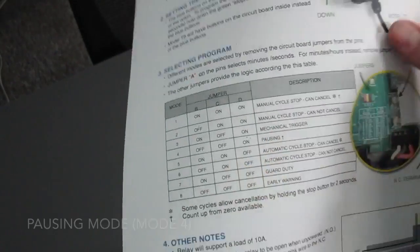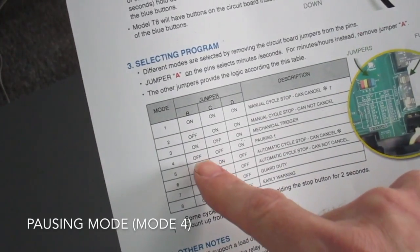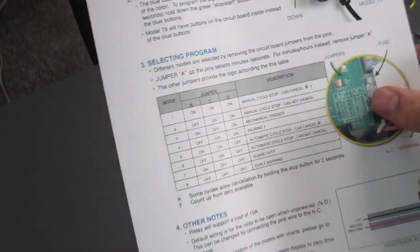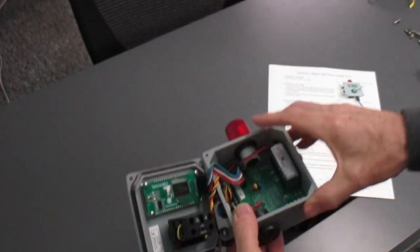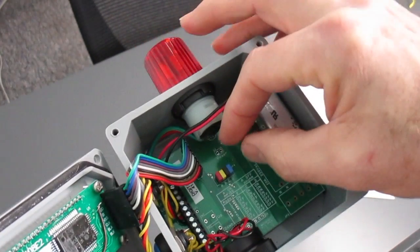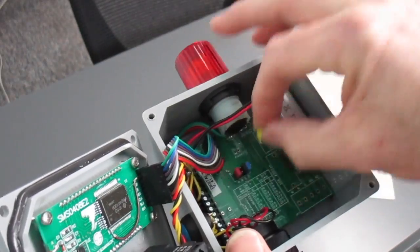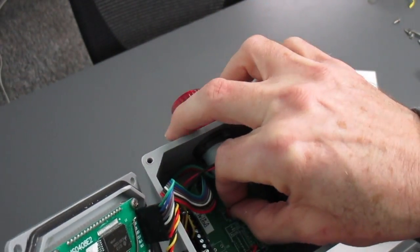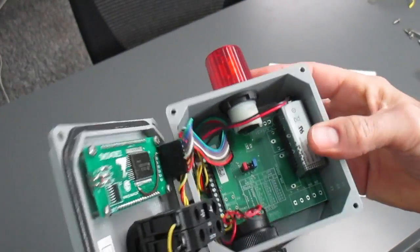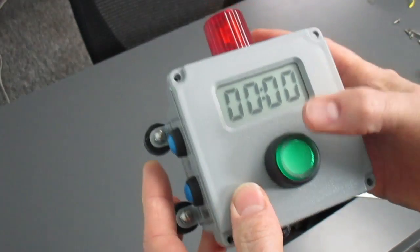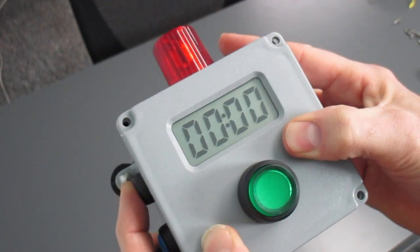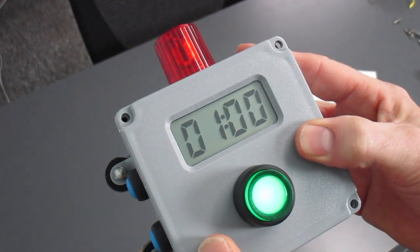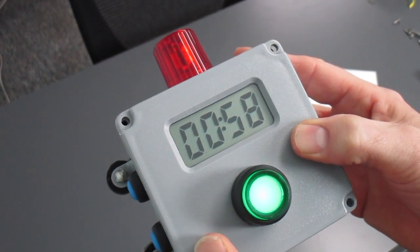The pausing mode, let's look at that. So we have jumper B and C will come off of the pins. So that's done like this. B and C come off. And so now let's set a time of one minute. So now we start our countdown and it counts down like you'd expect.